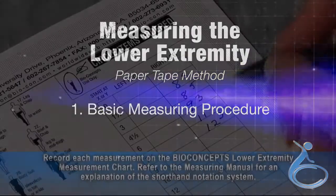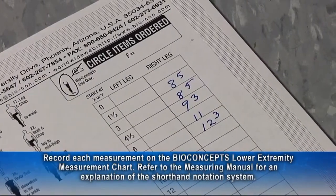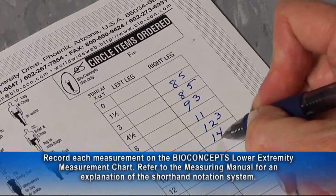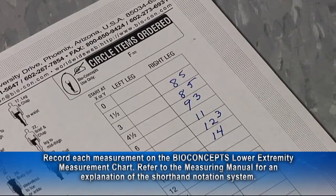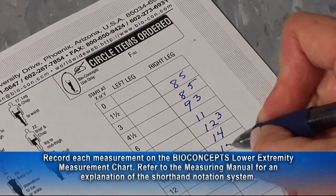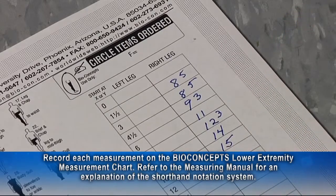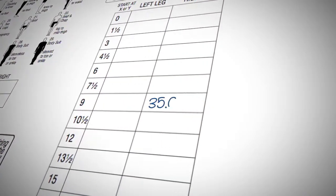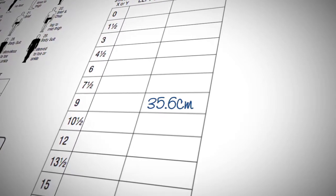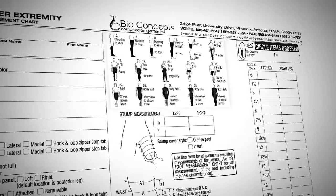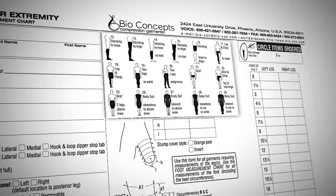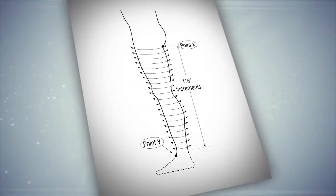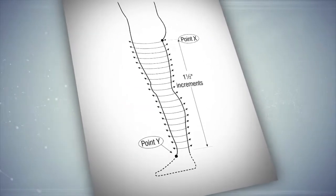Record each measurement on the Bio Concepts lower extremity measurement chart. Refer to the measuring manual for an explanation of the shorthand notation system. For measurements recorded in inches, measurements in centimeters are also welcome — simply record in decimal notation. Know the measurements you need before you start measuring.